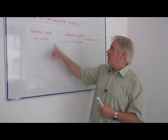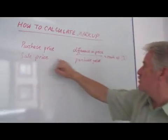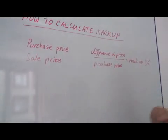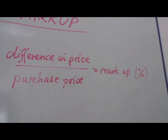So what we've got are a purchase price and a sale price. The difference between these two is the difference in price. If we then divide the difference in price by the purchase price, this is what we call the markup.